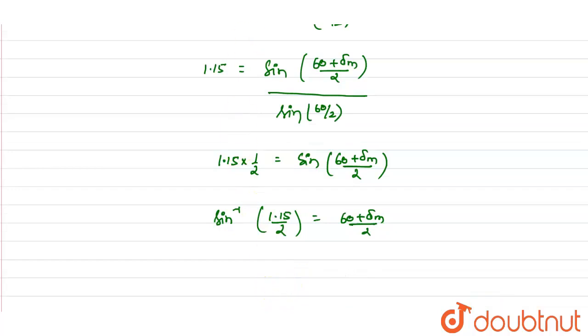From here we will get our minimum deviation delta m coming out as 10.199 degrees or approximately 10.2 degrees. So this is the answer.